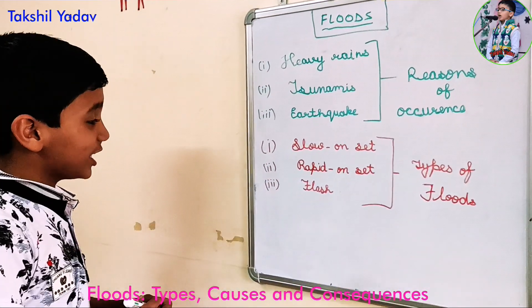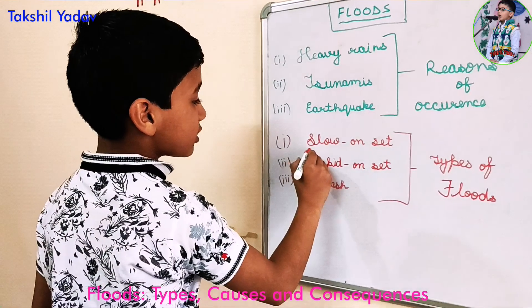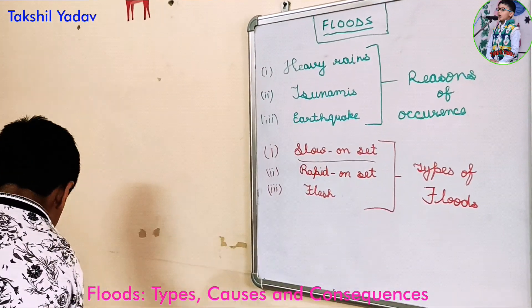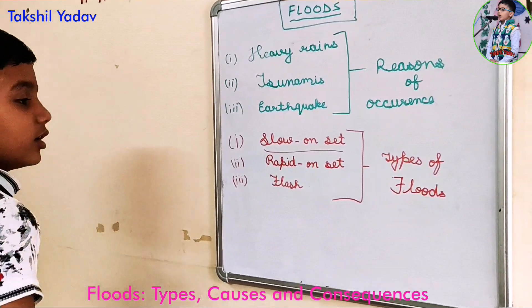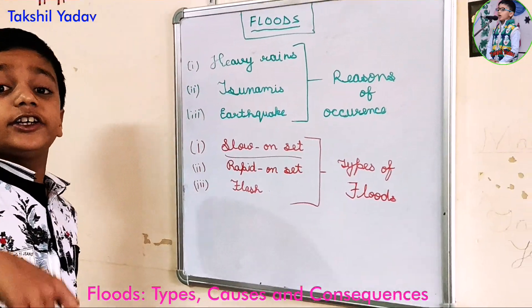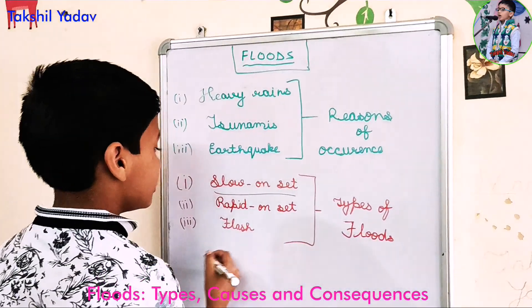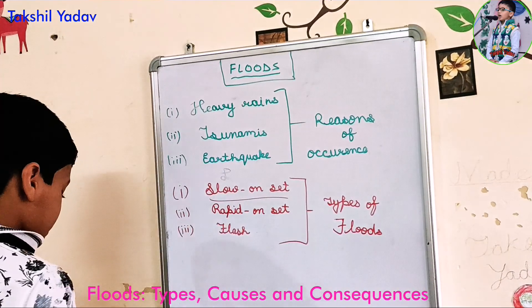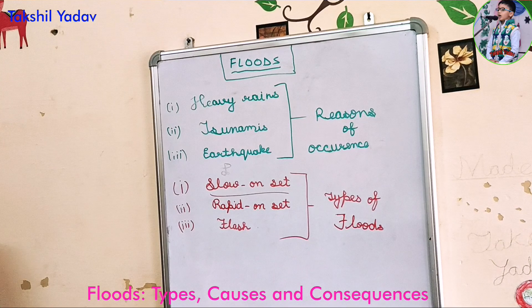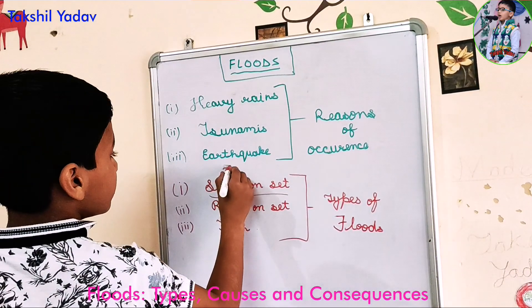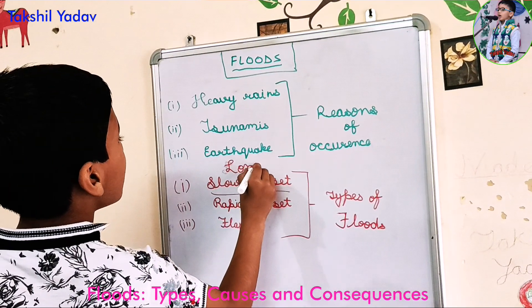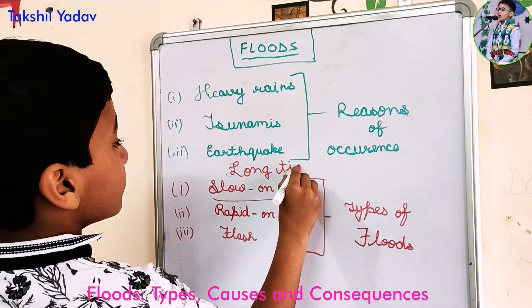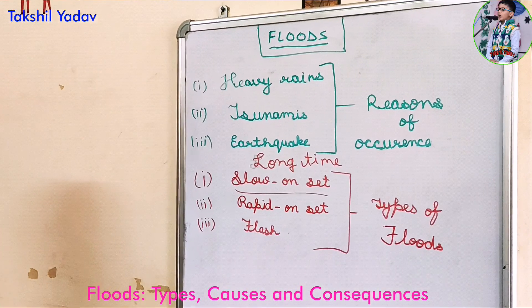What is the difference between these three types of floods? The slow onset floods may take days or even weeks — they take a long time to occur.